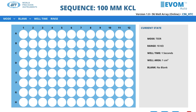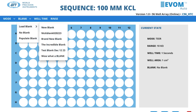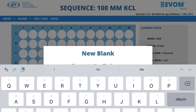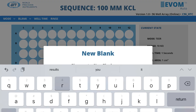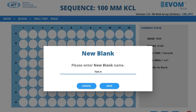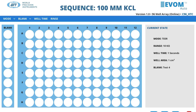To start the blank setup, select the Blank menu and choose Load Blank, and then New Blank to create a container for the blank baseline data. Once the sequence is saved, the container is created with a default value of zero shown.